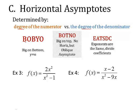BOBYO means big on bottom. That means the power of x is bigger on the bottom. So, y equals 0 is your asymptote. BOTNO means the power of x is bigger on top. It's not horizontal, but it's oblique. And we'll deal with this in a couple weeks. But I just want you to know it's part of the acronym. The third part is the exponents are the same, EATSDC. So, what happens when you have the same exponent on top and the bottom? Well, you just divide the coefficients. And that's your asymptote.